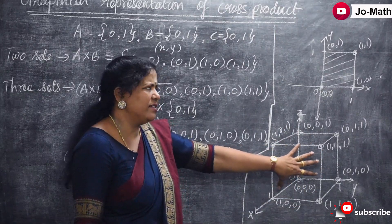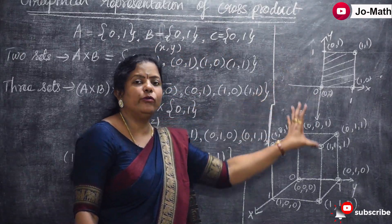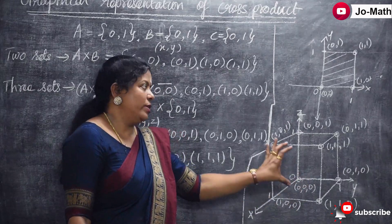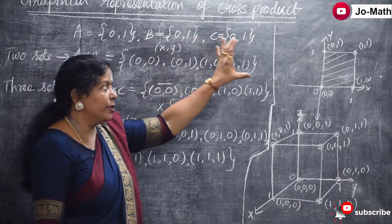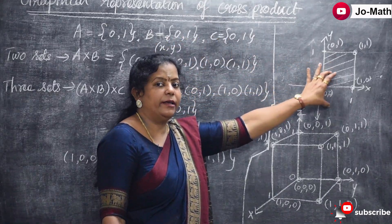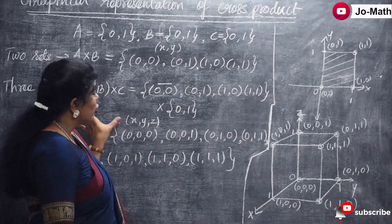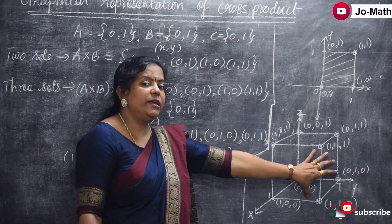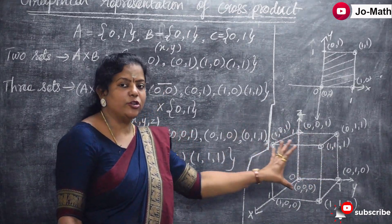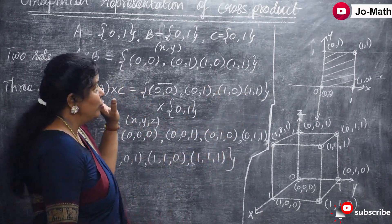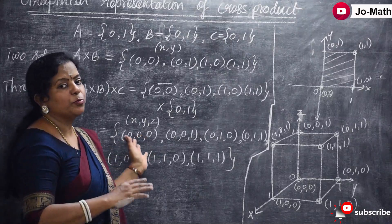So this is my conclusion: the cross product of two sets gives a two-dimensional plane, and any plane figure can be represented this way. The cross product of three sets gives a three-dimensional space, and any solid figure can be represented. This is the graphical representation of cross product — Cartesian plane and cross product.